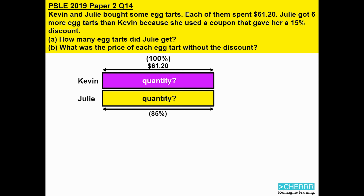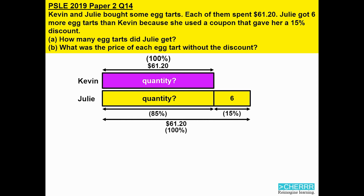But we know from the question that she did pay $61.20, which means she actually has to buy some more. In the question, we are told that she bought 6 more. So this extra 6 tarts must account for the missing 15%. Now we know the 85% and the 15% will add up to 100%, which is the $61.20 that Julie paid.